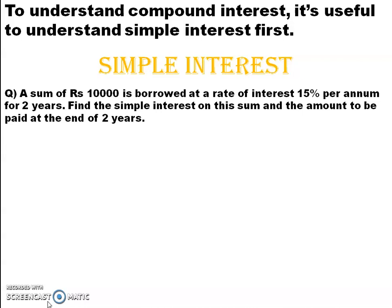Imagine a person is going to the bank and taking a loan of Rs. 10,000. You know that the bank will not give you a loan as such. We have to pay an extra amount to the bank when we repay at the end of 2 years. There is a rate of interest based on which we calculate this extra amount. Here it is given as 15%, and the amount the person is taking is 10,000.